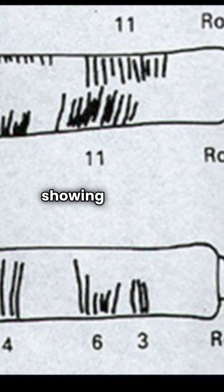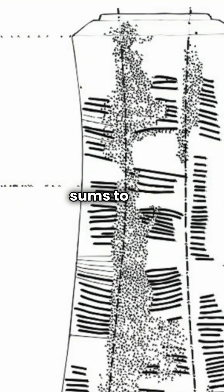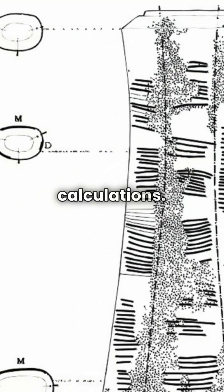Column B features prime numbers between 10 and 20, showing advanced mathematical understanding. Column C also sums to 60, indicating systematic calculations.